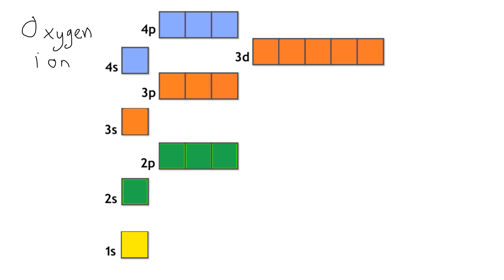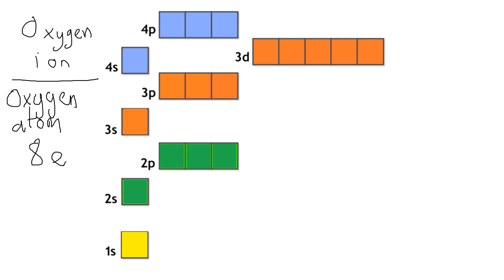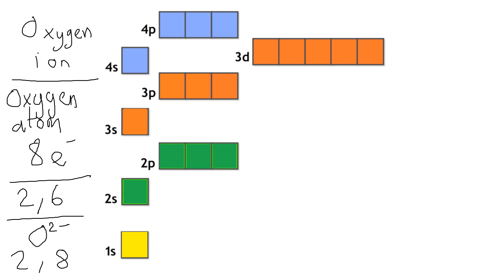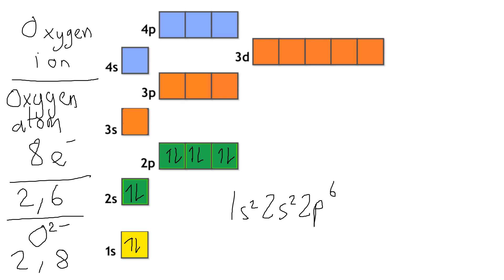If you take oxygen as an example next — an oxygen ion. An oxygen atom has got eight electrons, so its configuration would be 2, 6: two electrons in the first shell, then six. It wants to gain two electrons to have a full outer shell, so it forms the O²⁻ ion, which has the configuration 2, 8. In SPD terms that would be 1s2, 2s2, 2p6.